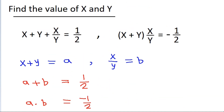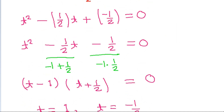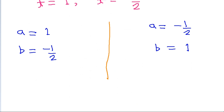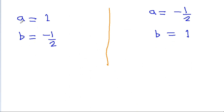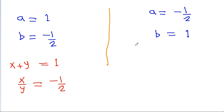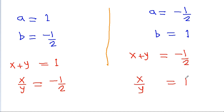Here we have a is equal to x plus y and b is equal to x by y. So in the first case, a is equal to x plus y equals 1 and b is equal to x by y equals minus 1 by 2. In the second case, x plus y is equal to minus 1 by 2 and x by y is equal to 1.